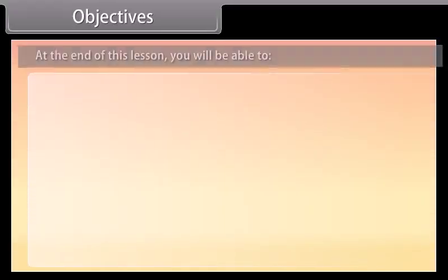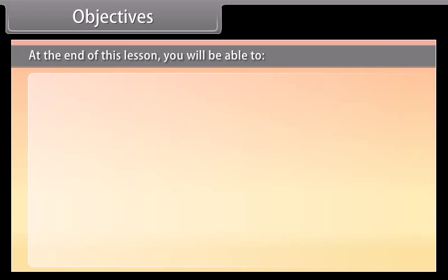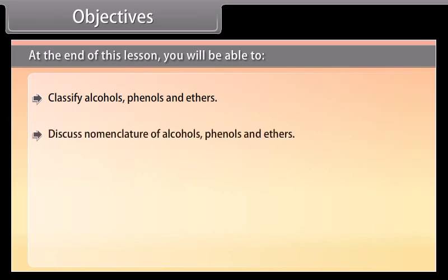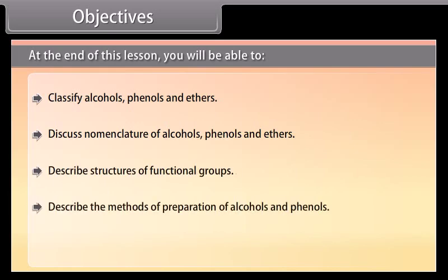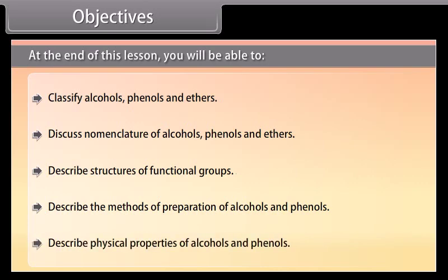At the end of this lesson you will be able to: classify alcohols, phenols and ethers; discuss nomenclature of alcohols, phenols and ethers; describe structures of functional groups; describe the methods of preparation of alcohols and phenols; and describe physical properties of alcohols and phenols.